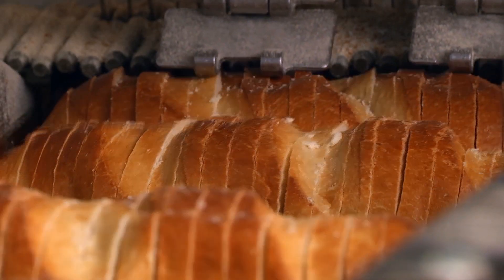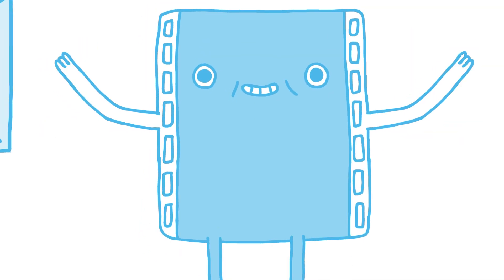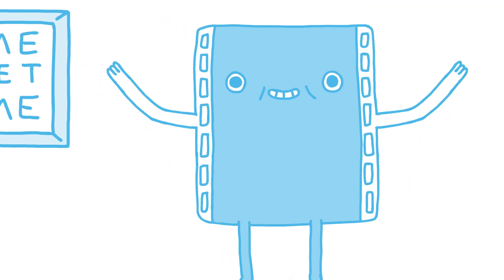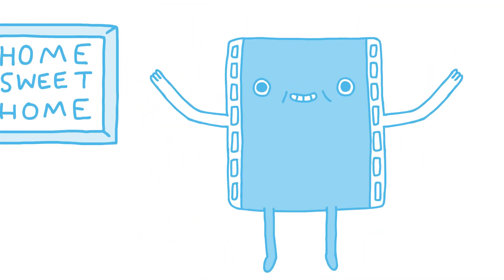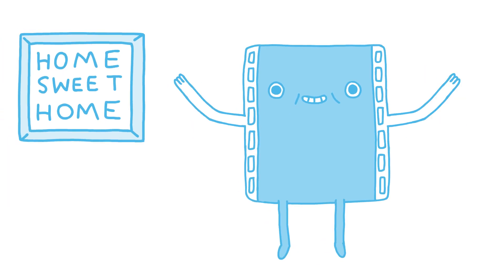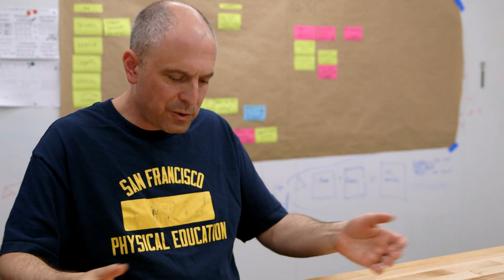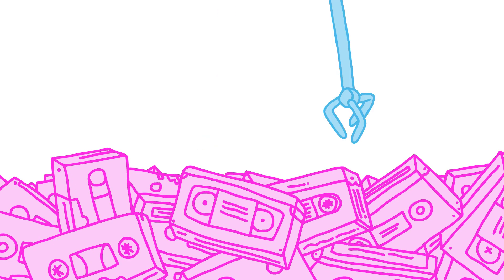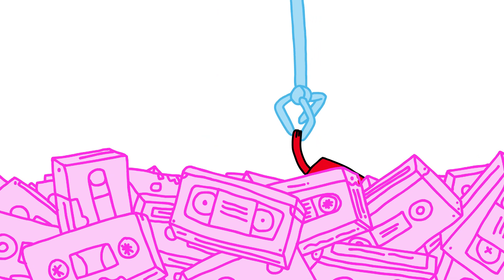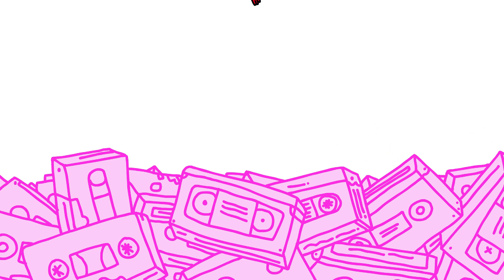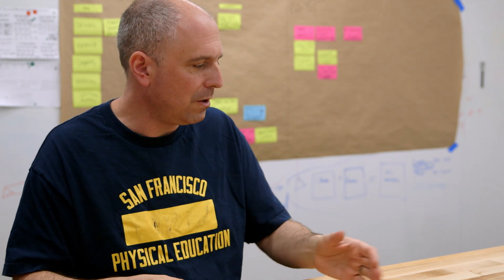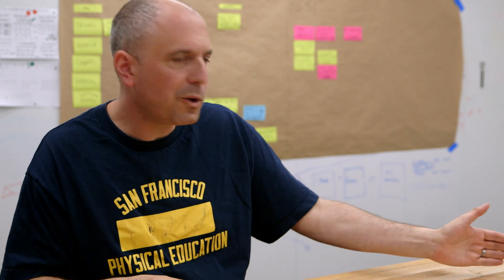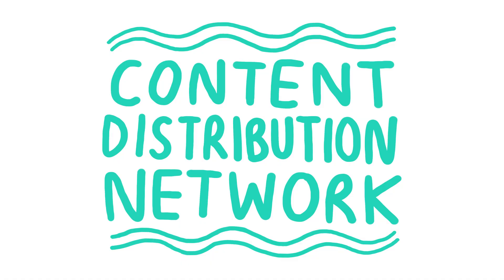Another thing that can speed up how fast videos play is where, physically, those video files are coming from. It's easy to think of YouTube as a single thing, where all the videos sit in a giant pile. But in practice, when you watch a video, it gets a little bit closer to you. More formally, this is called YouTube's Content Distribution Network.